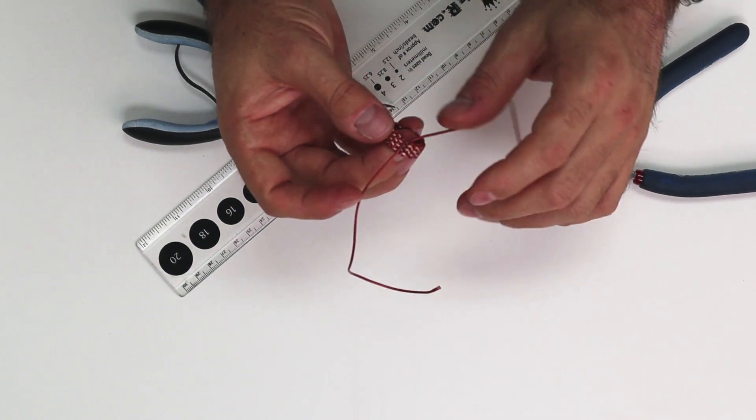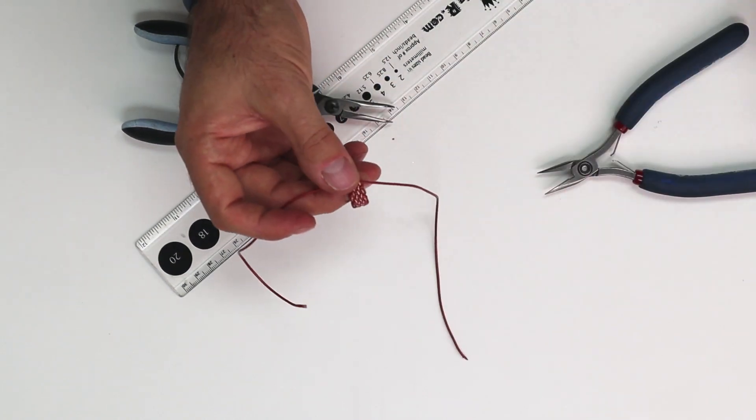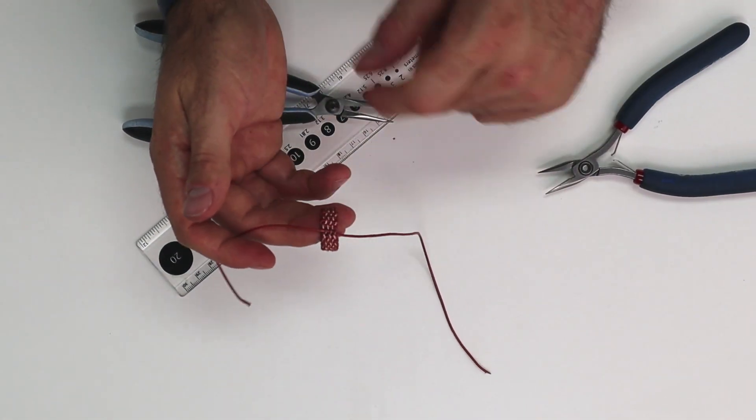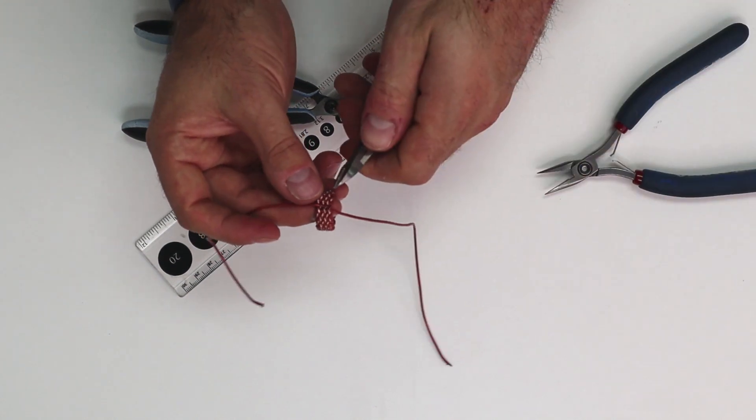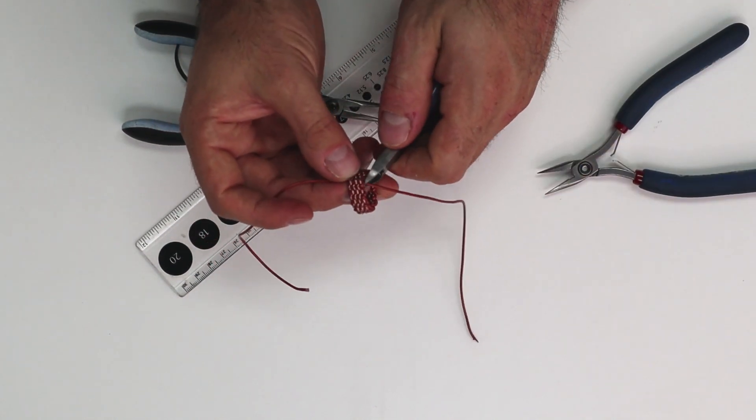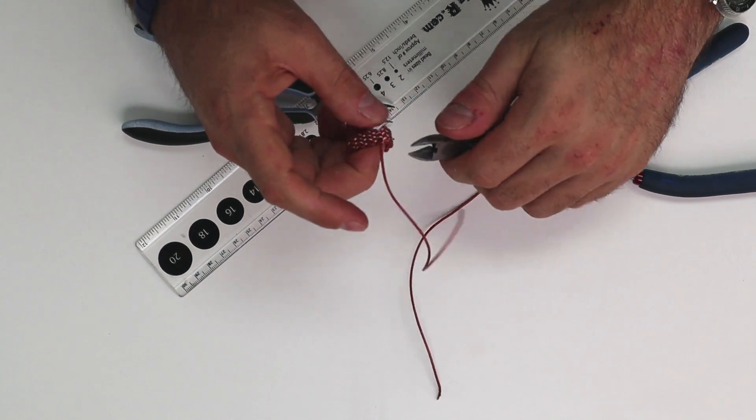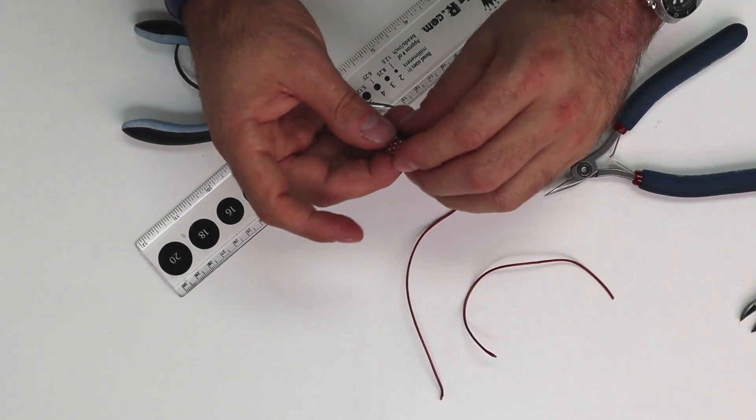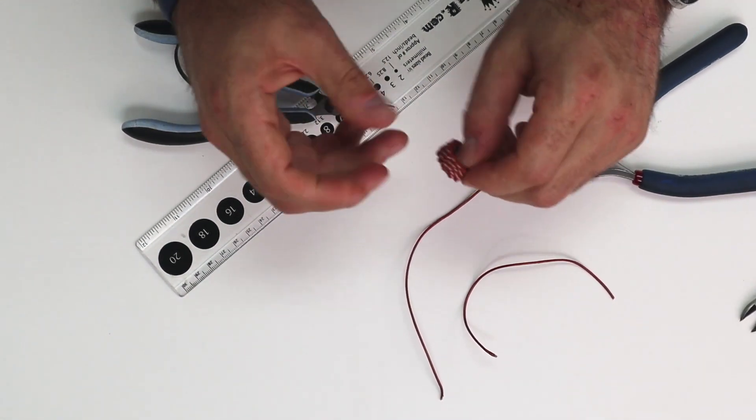Now, what I like to do is I like to just trim the excess. Because that cord is really snug in there, all I really need to do is just trim the excess cord off. You can put a spot of glue if you would like. But in my experience, you don't even need it. And there you have it. We have a gorgeous chain ring.